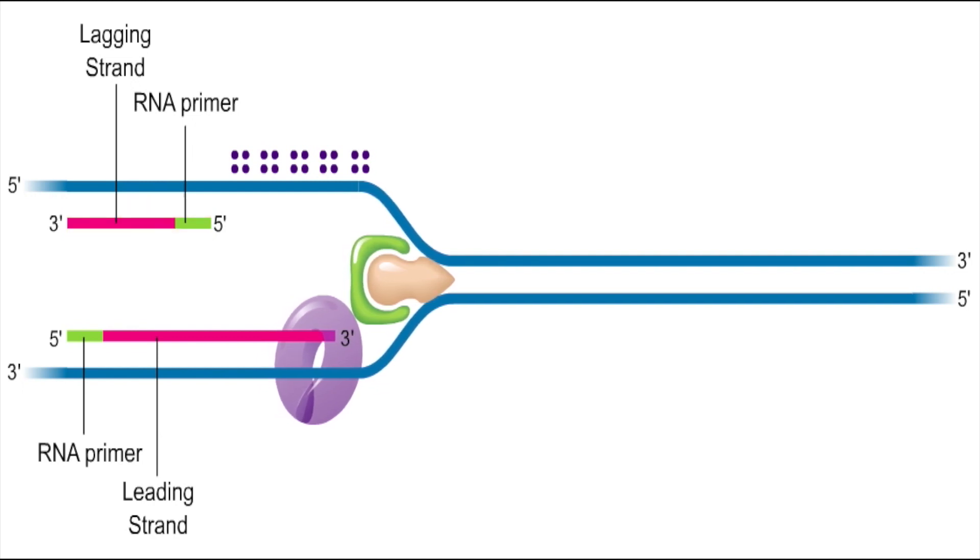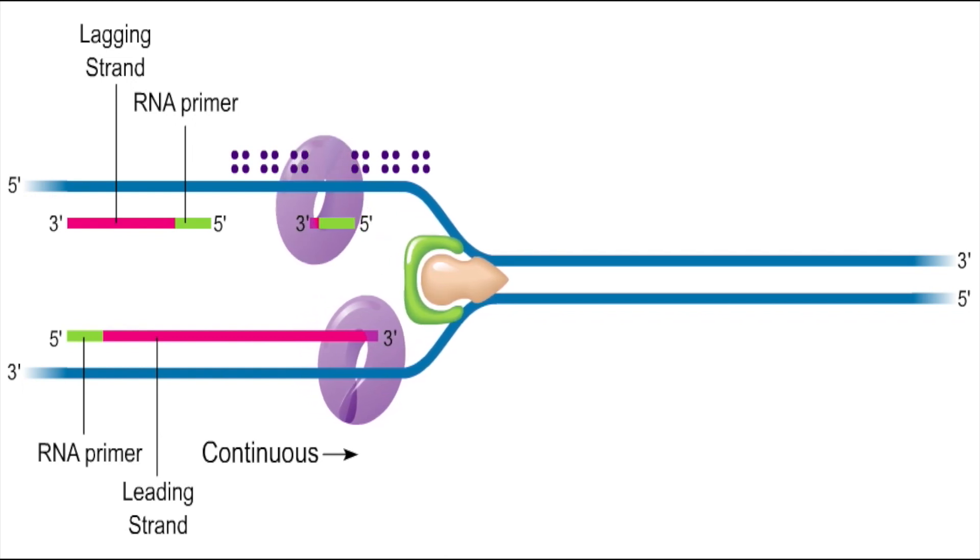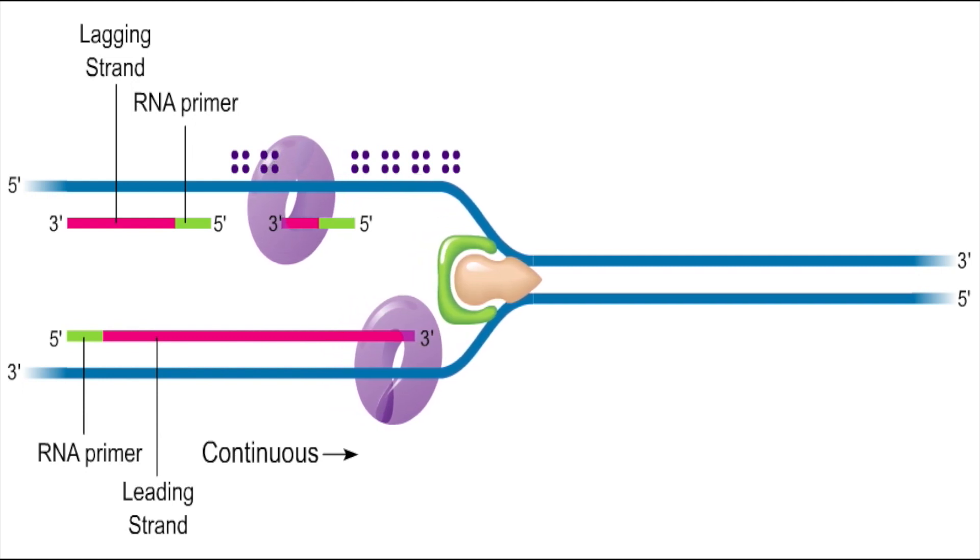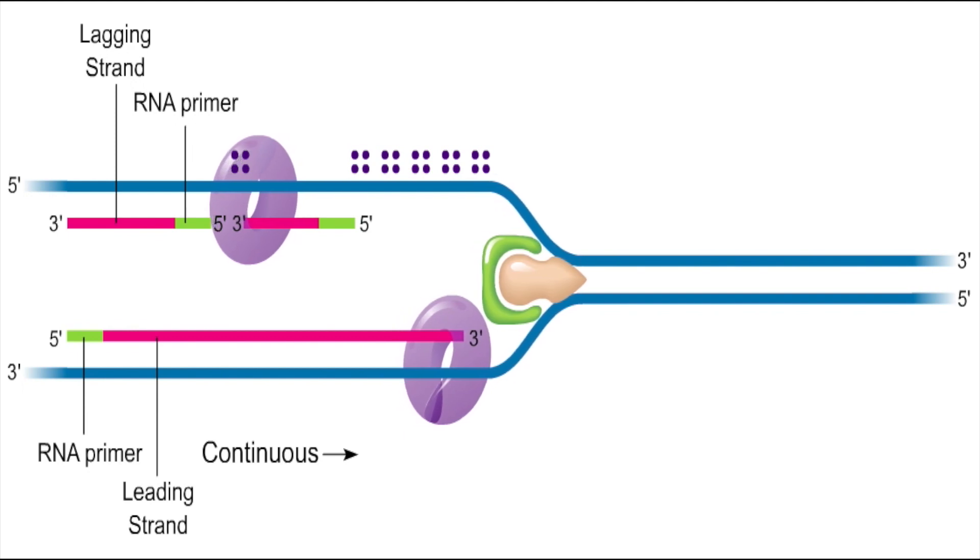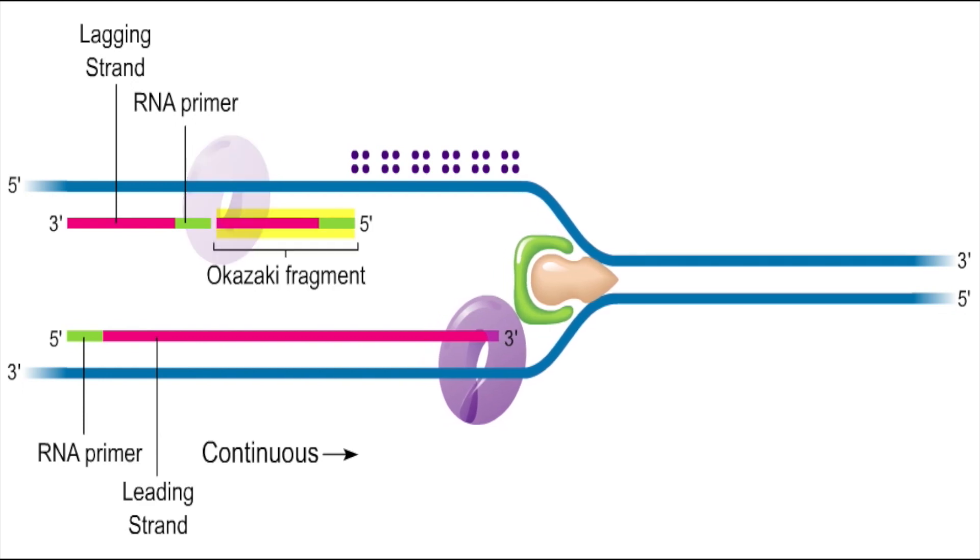Meanwhile, new nucleotides are added to the leading strand so that the leading strand is synthesized continuously. On the lagging strand template, however, replication can only proceed in the five-prime to three-prime direction. For DNA replication to continue on that strand, a new RNA primer is synthesized by primase near the replication fork. The primer is then elongated by the action of DNA polymerase III to produce a second Okazaki fragment. Thus, the lagging strand is synthesized discontinuously, producing Okazaki fragments separated by gaps.